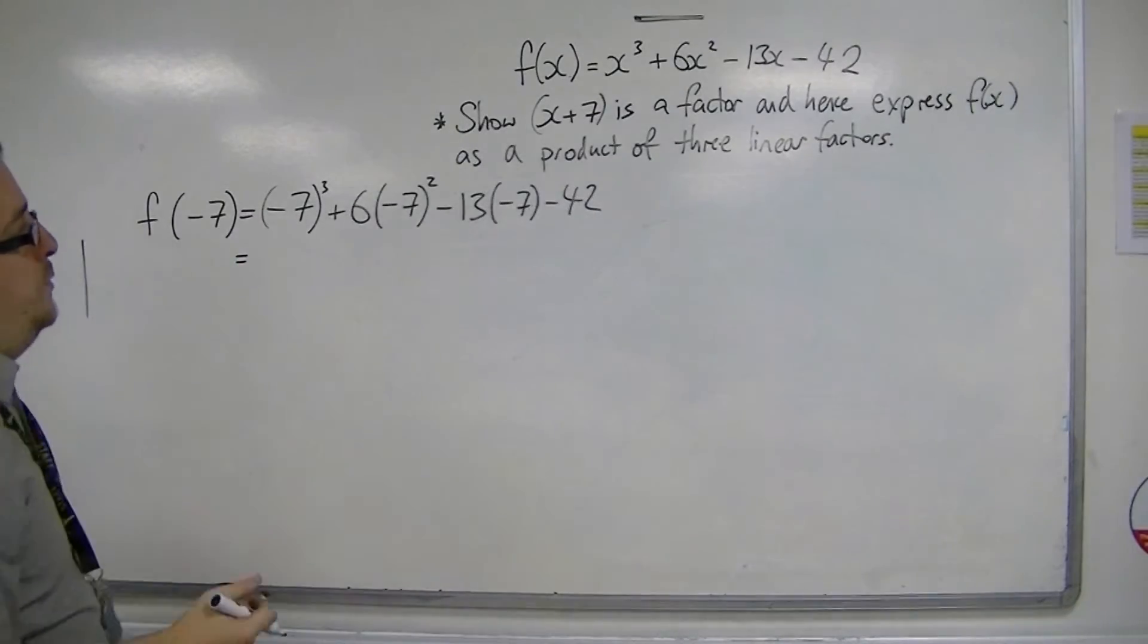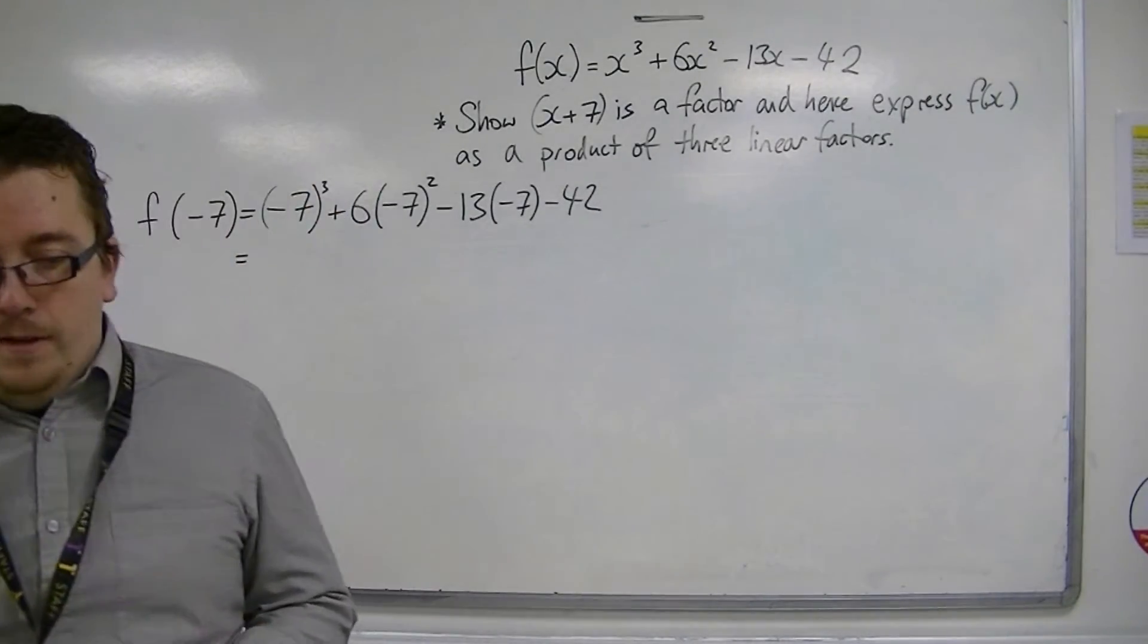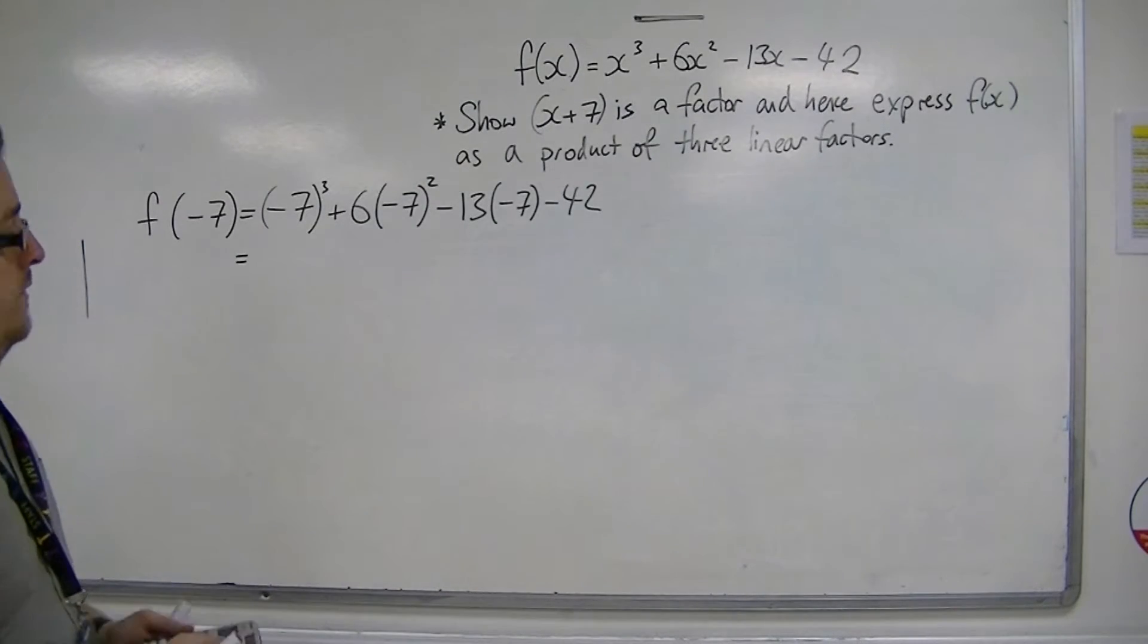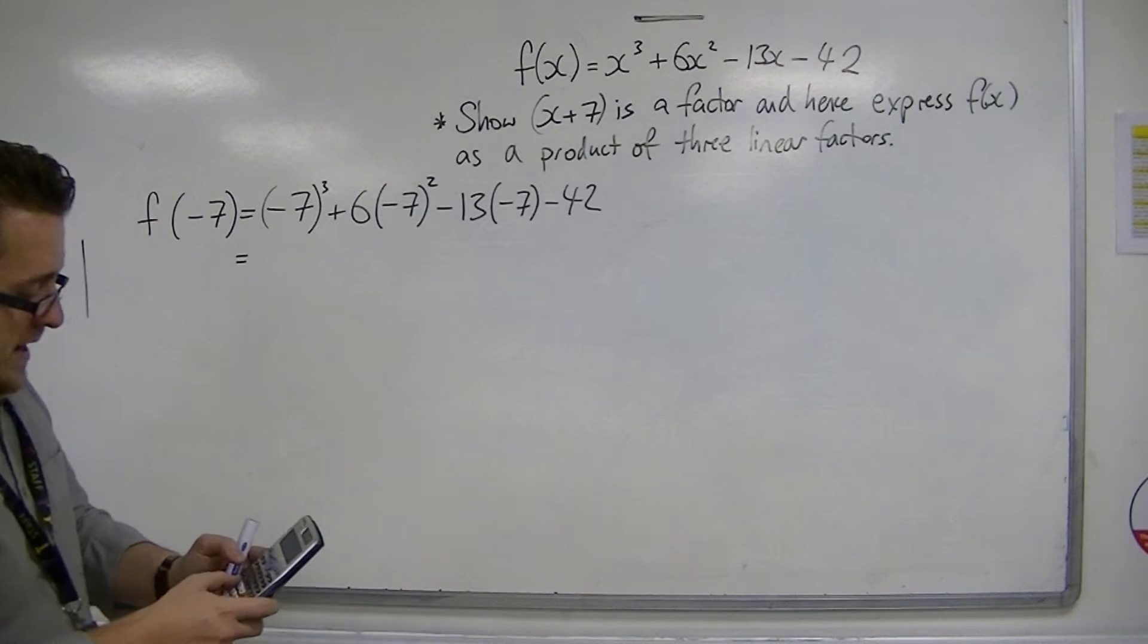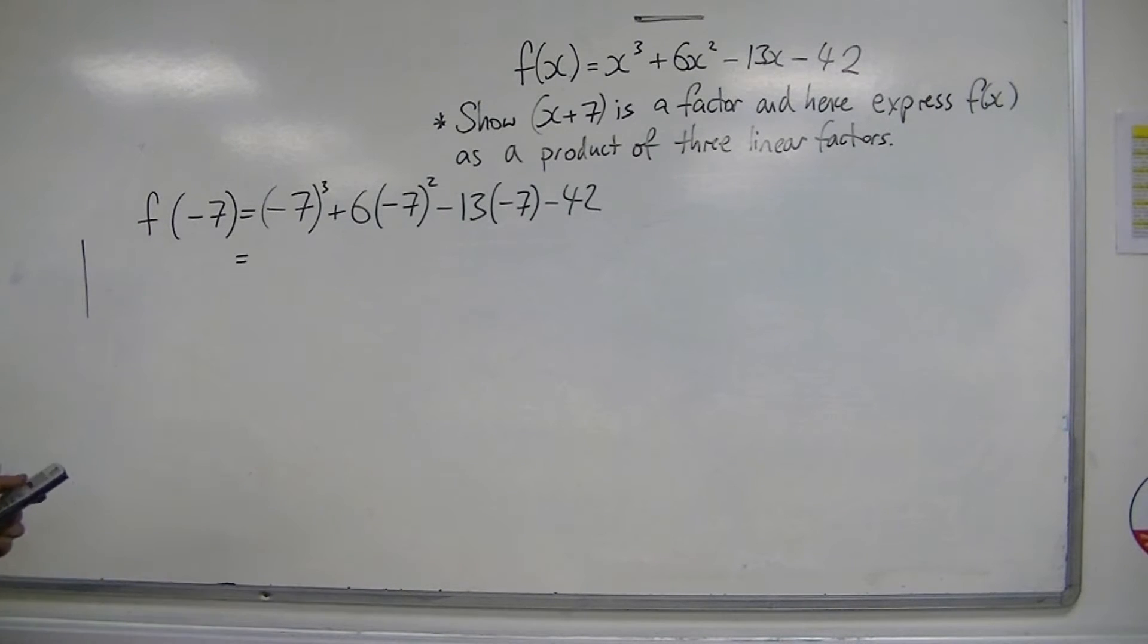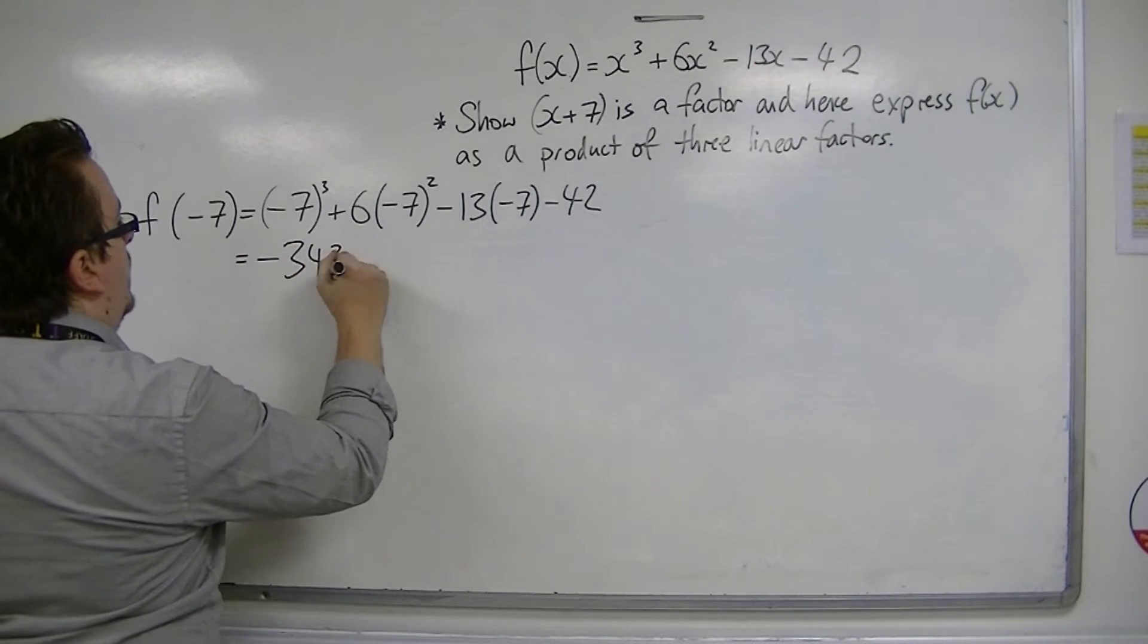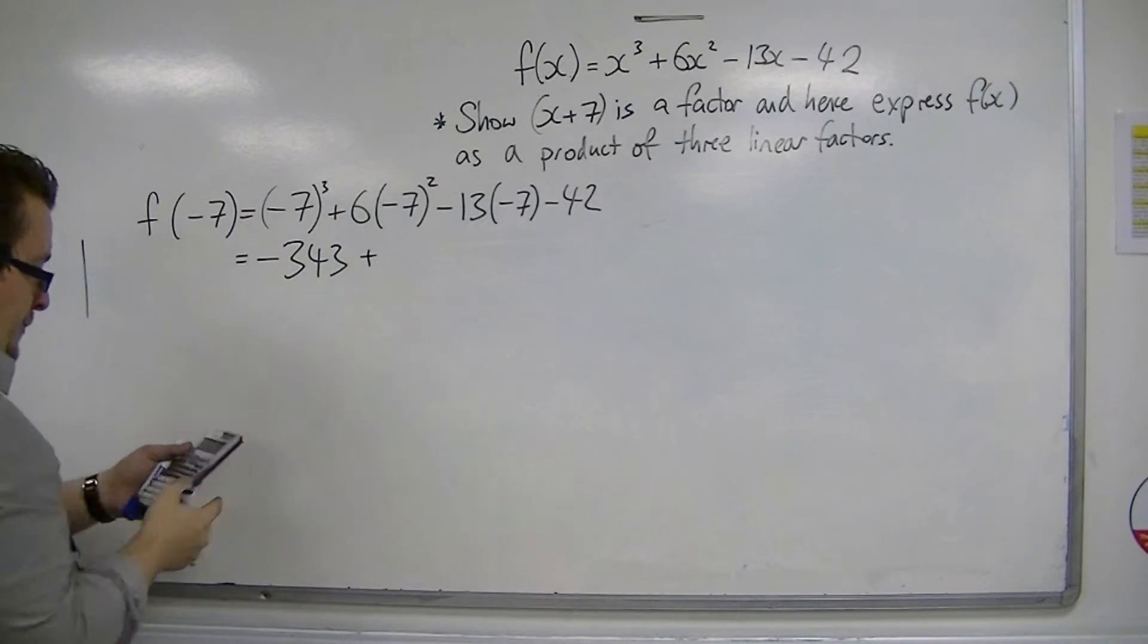Right, okay, so this is where I'm going to cheat. Core 1 is in general non-calculator, but I'm going to cheat to speed this up. So we're going to have minus 7 cubed, which is minus 343, plus 6 lots of 49, is 294.